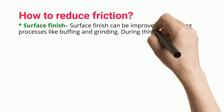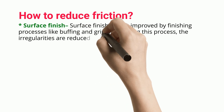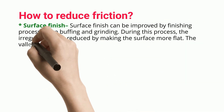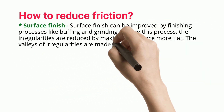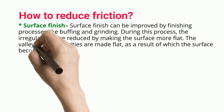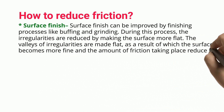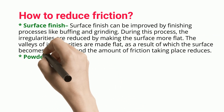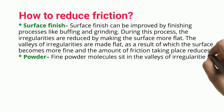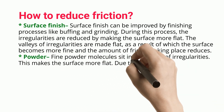Surface finish can be improved by finishing processes like buffing and grinding. During this process, the irregularities are reduced by making the surface more flat. The valleys of the irregularities are made flat, as a result of which the surface becomes more fine and the amount of friction reduces.